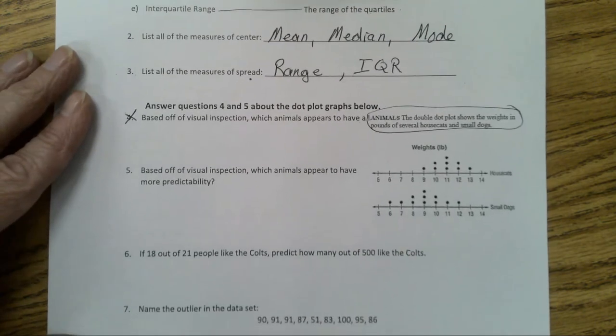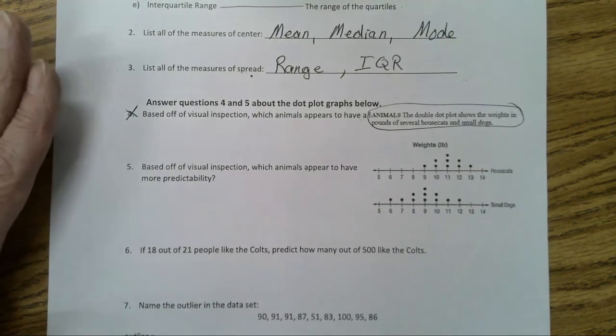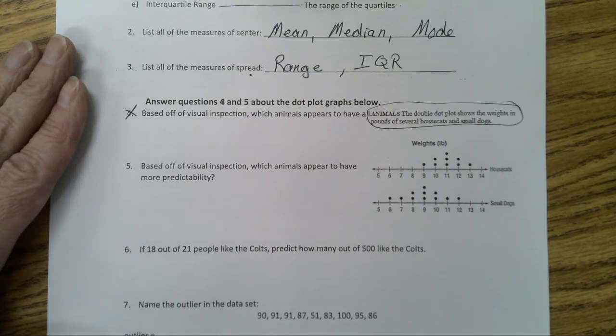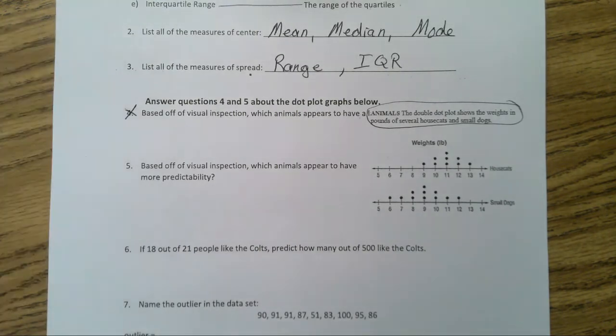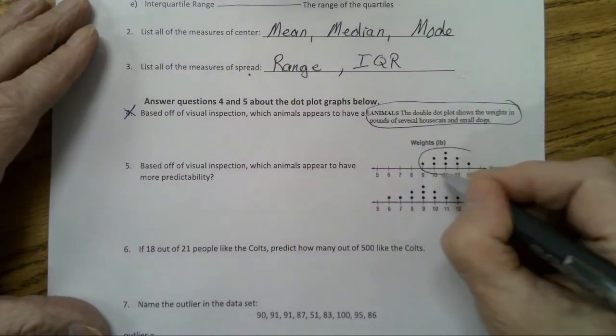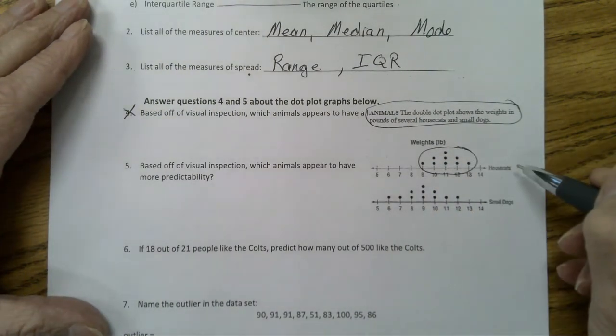So we're going to go on to question five. Based off of visual inspection, which animals appear to have more predictability? Well, that would be the data set that is most clustered together. And that would be this one here, and it's house cats.